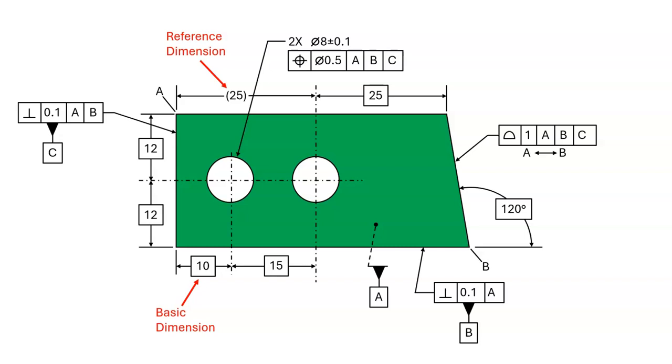A basic dimension is the one with the rectangle around it. A basic dimension specifies an exact, perfect, theoretical distance or a perfect, theoretical angle.